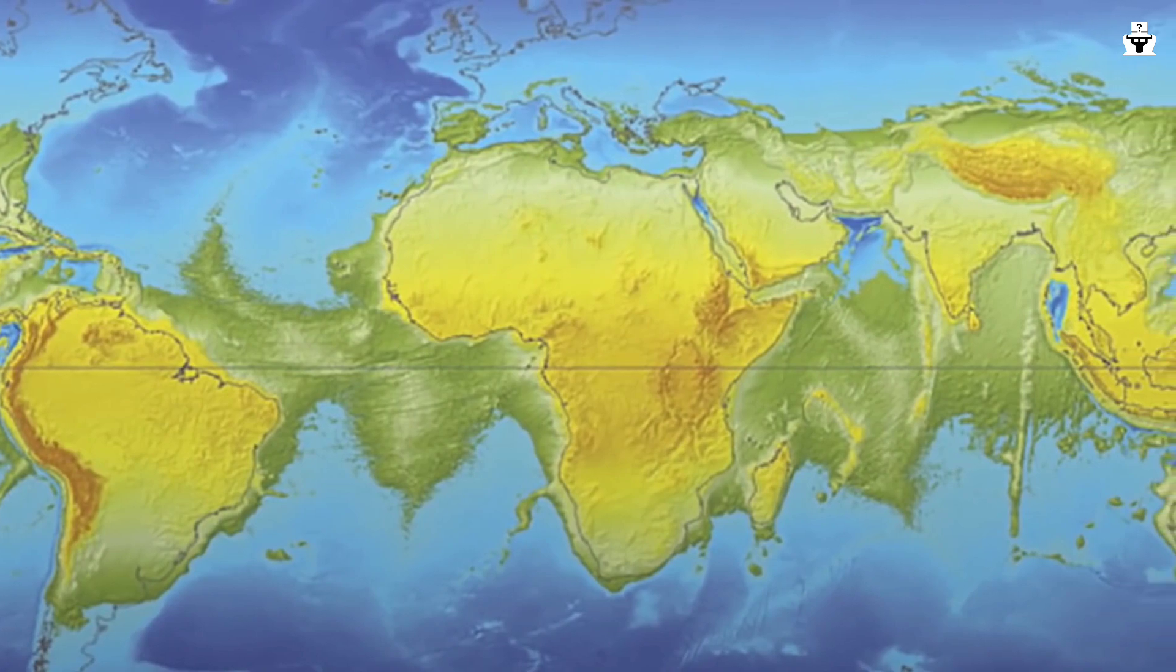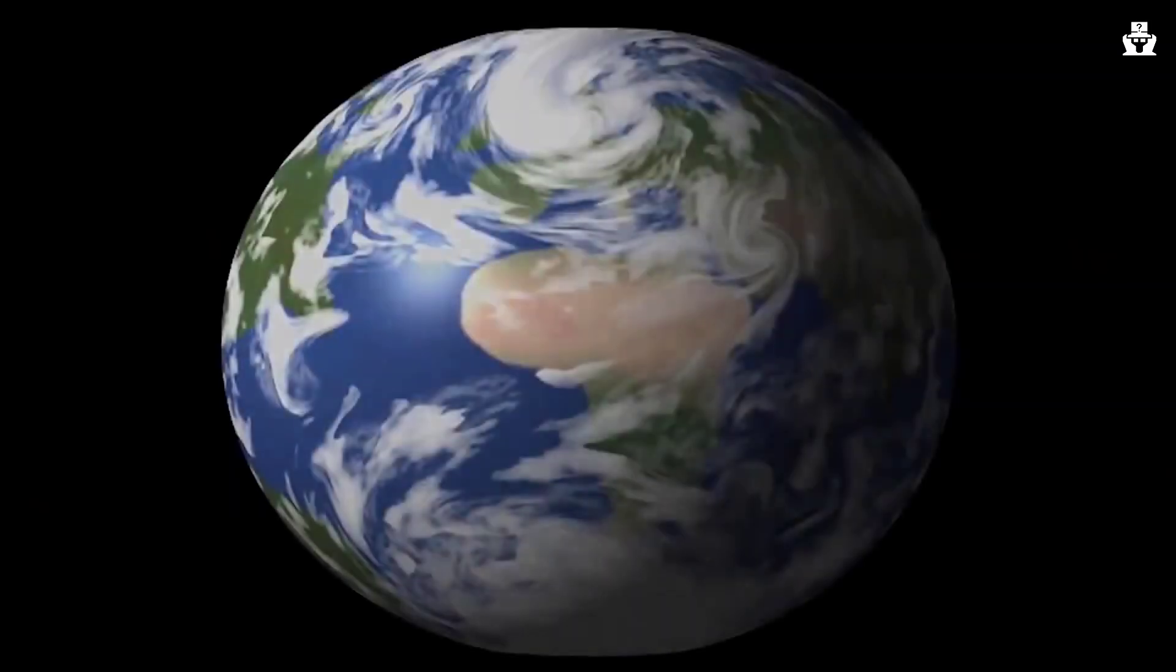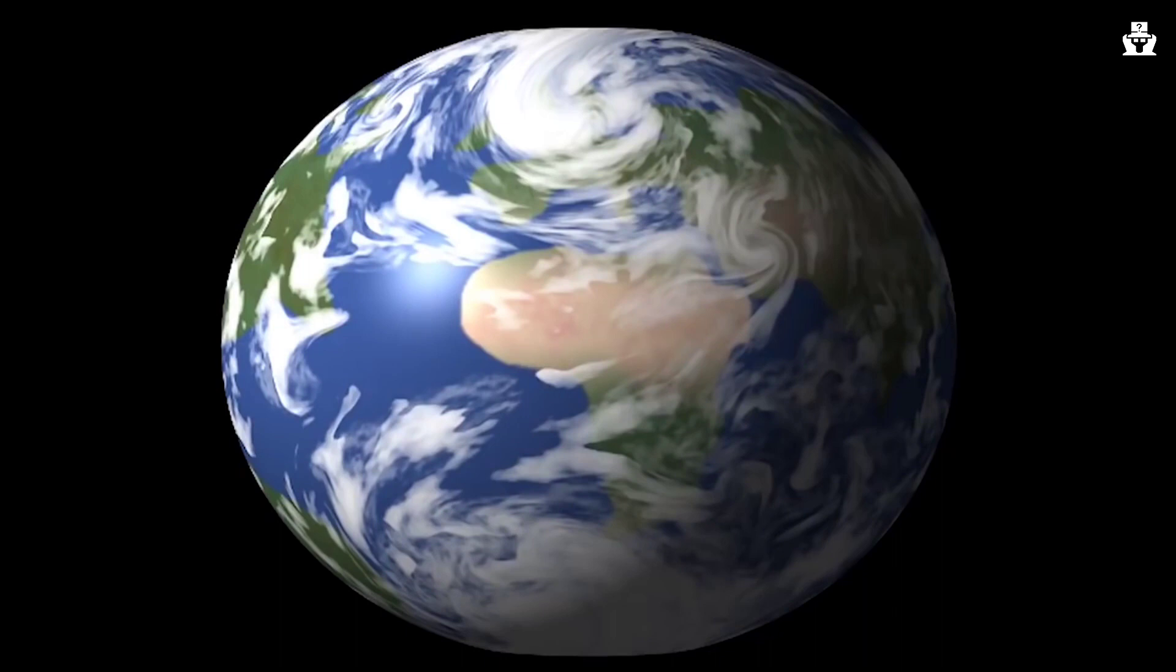Earth becoming a perfect sphere. The earth spins at 465 meters per second at the equator. Due to several billion years of spinning, the earth maintains the shape of an ellipsoid or flattened sphere.